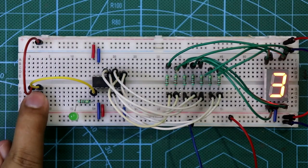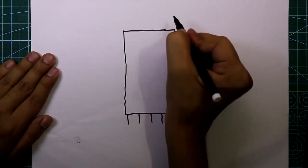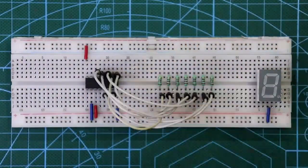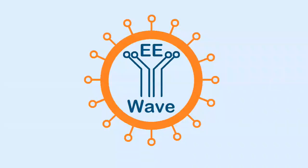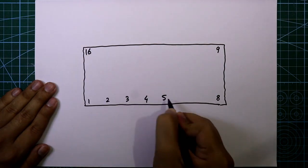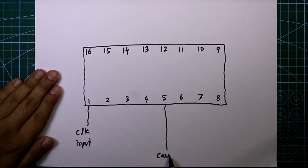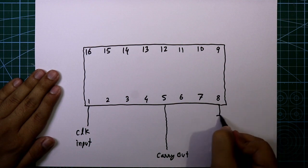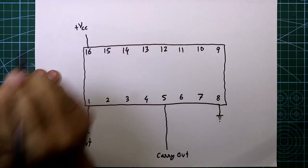Hello guys, in this video I will discuss the basic things of IC4026. Here is our IC4026 and it has 16 pins. Pin number one is the clock input pin, pin number five is carry out, pin number eight is ground, and pin number 16 is plus VCC — here we will connect plus 5 volt.